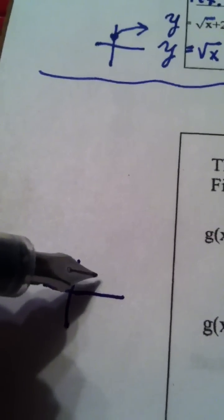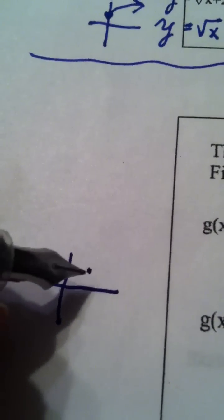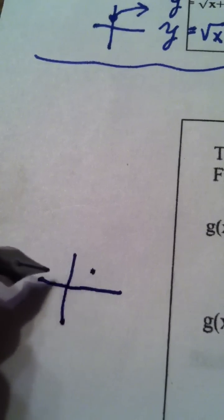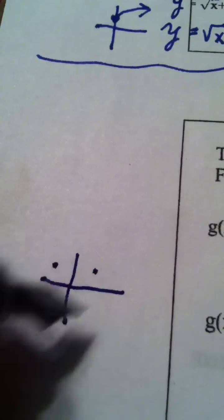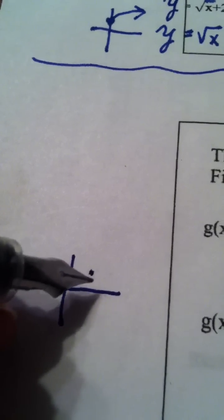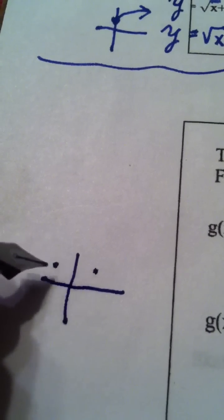If I was in this quadrant and I multiplied the x value by -1, it would take me to this quadrant. The y value wouldn't change, but the x value would. It would go from a positive to a negative.